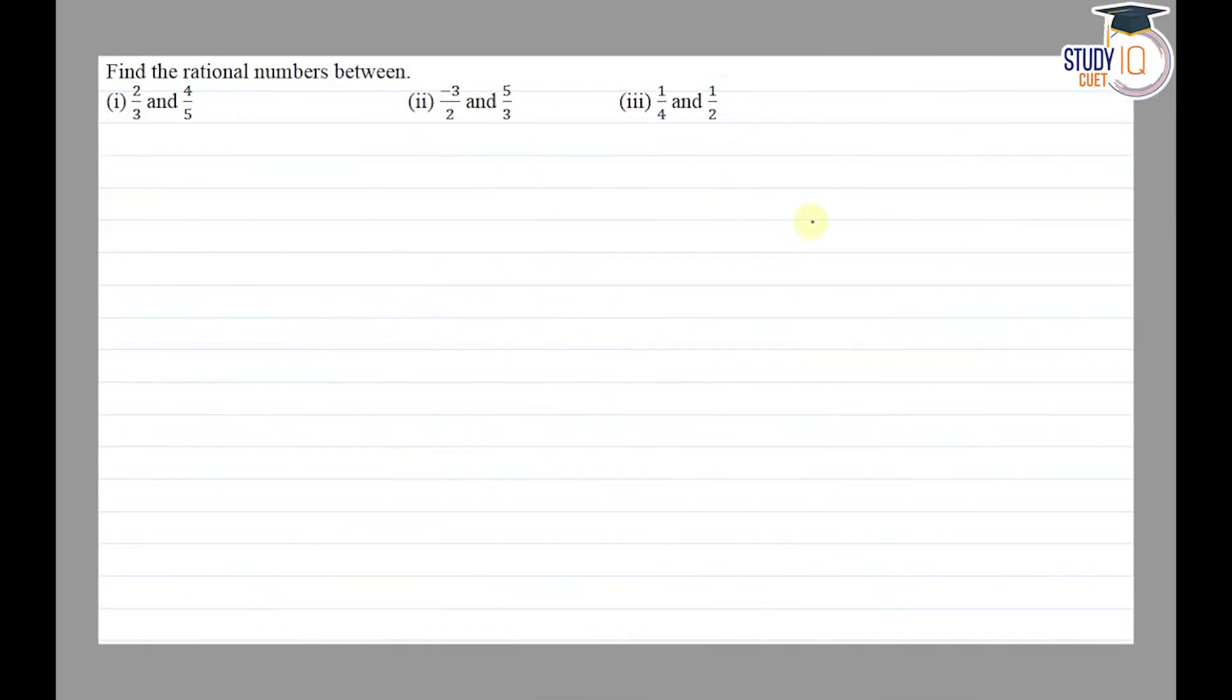Hello everyone, this question appears in Class 8th NCERT chapter of rational numbers. This is the fifth question of its exercise 1.2. The question says find the rational numbers between: